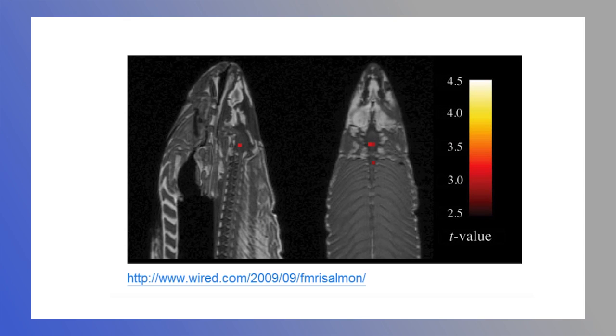They ran a voxel by voxel analysis and checked for statistical significance at each voxel of whether or not brain activation existed and they found significant things. And the reason they found significant things is because of a lack of adjustment for multiple comparisons. And of course there was no brain activation because it was a dead salmon.